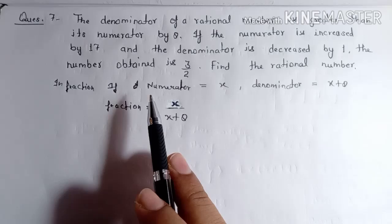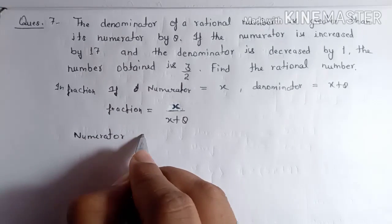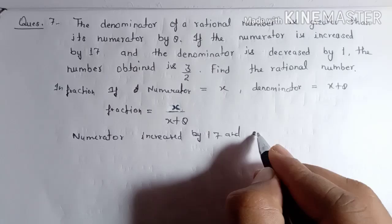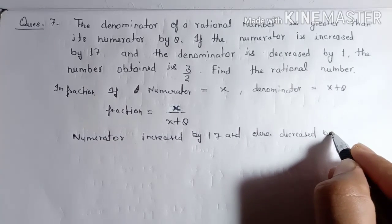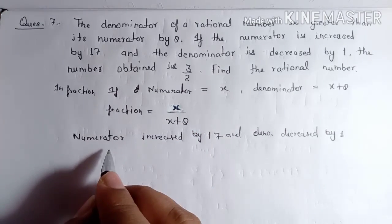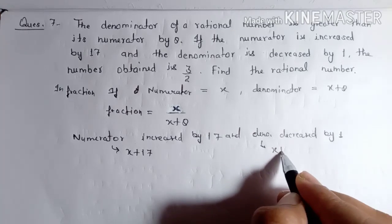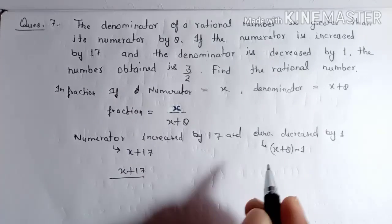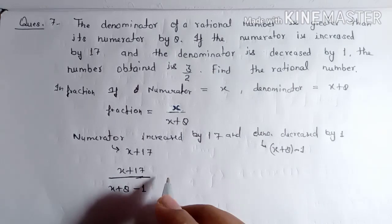It is said that when the numerator is increased by 17 and the denominator is decreased by one, the number is three upon two. So the new numerator is x plus 17, and the new denominator is x plus eight minus one. The new fraction equals three upon two.